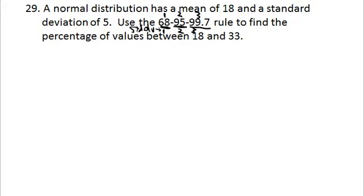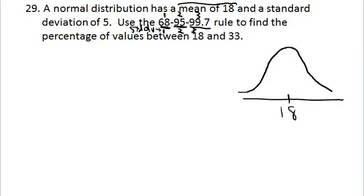It's almost a cookbook-type process. You look at the mean, which is 18. I highly recommend making a little sketch — it doesn't have to be super accurate, but it gives you a visual way of seeing what you're trying to do. You've got your normal distribution sitting over a mean of 18, and you want to know about the values between 18 and 33.